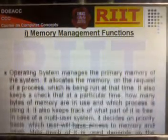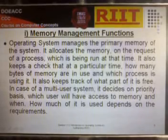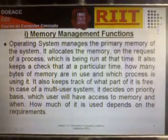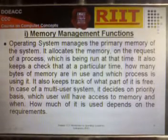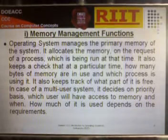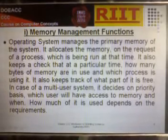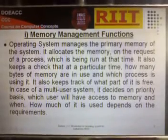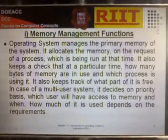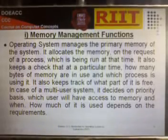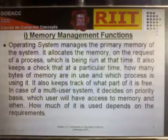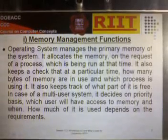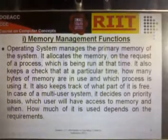The first function is Memory Management. The operating system manages the primary memory of the system. It allocates memory on the request of a process that is being run at that time. It also keeps track of how many bytes of memory are in use at a particular time and which process is using it. It keeps track of what part of memory is free. In the case of a multi-user system, it decides on a priority basis which user will have access to memory, when, and how much, depending on requirements.